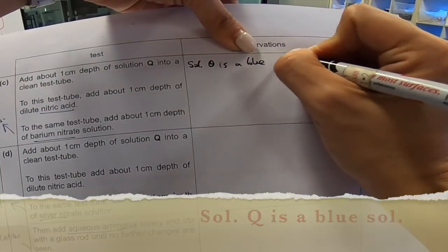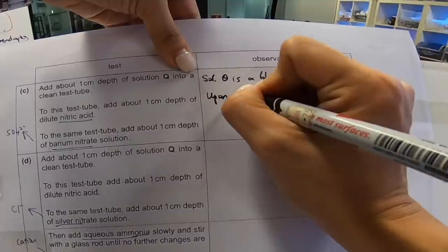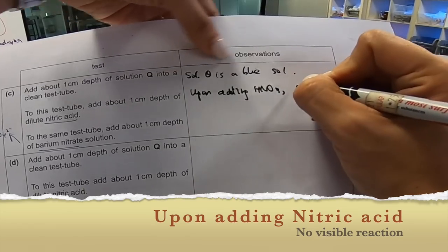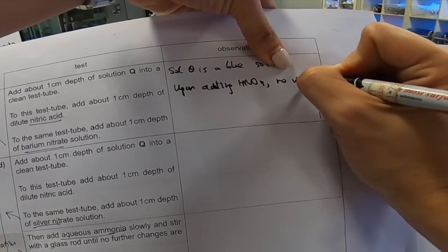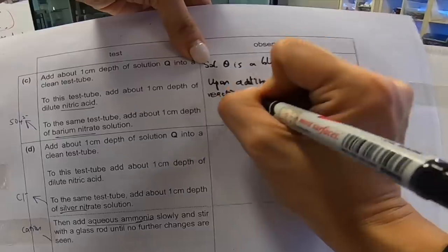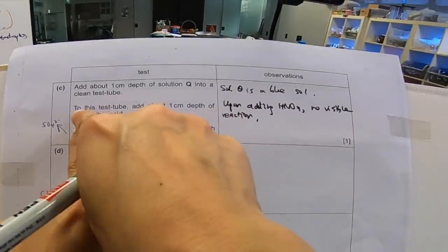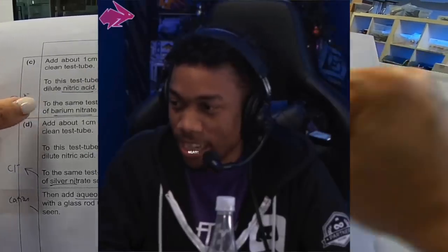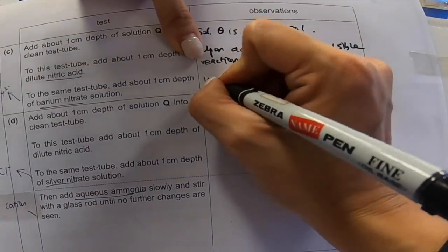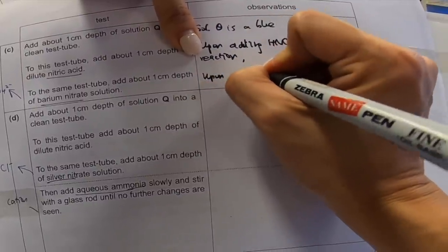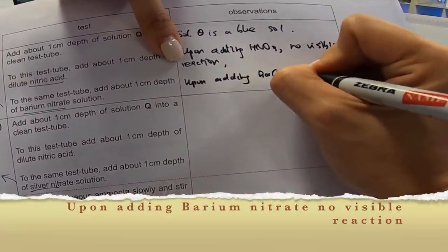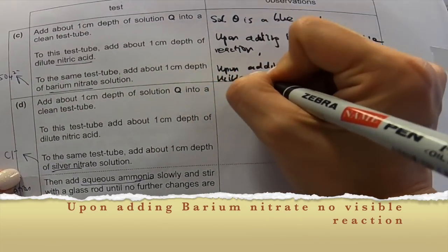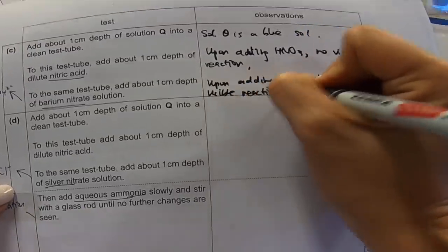Then, we're going to add barium nitrate according to the marking. No visible reaction. Let me quickly put this aside. And then, write down my observation. Solution Q. It's a blue solution. Upon adding HNO3. No visible reaction. Upon adding BANNO3. Also, no visible reaction. Let's move on. Part D now.